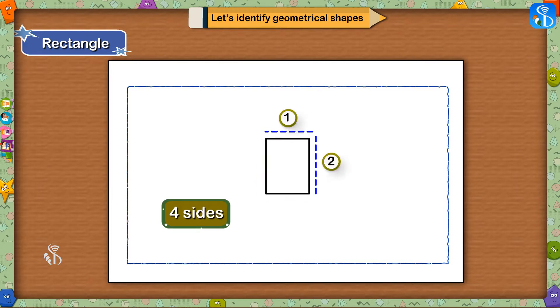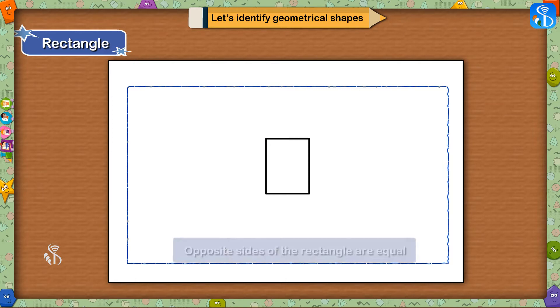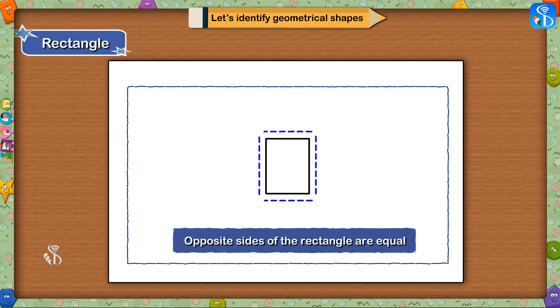This is its first side, this is its second side, this is the third one, and this is the fourth one. We can see that the opposite sides of the rectangle are equal.